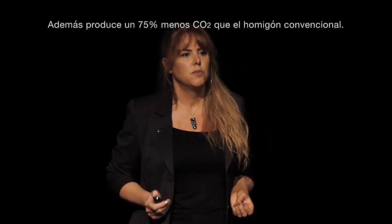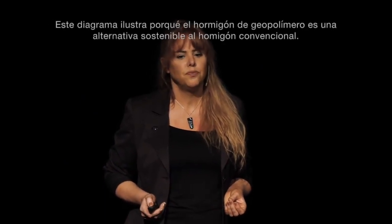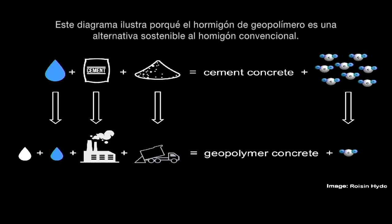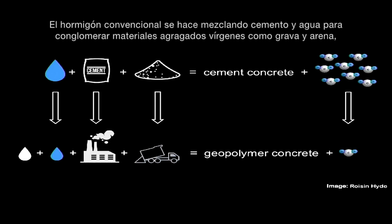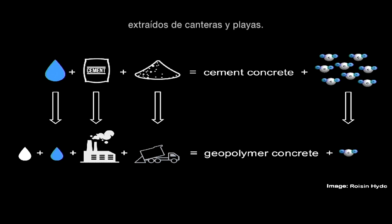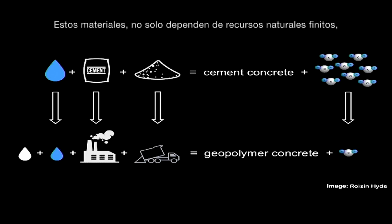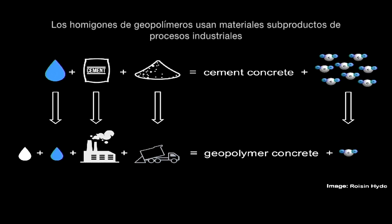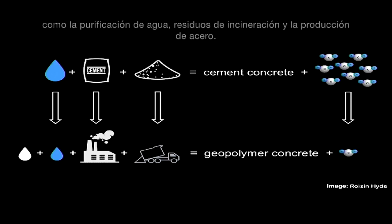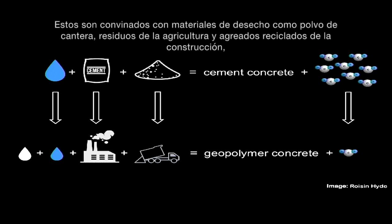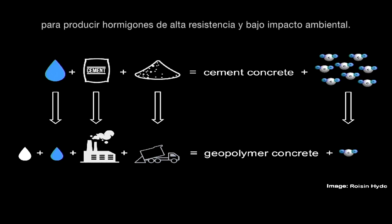It also produces 75% less carbon dioxide than conventional concrete. This diagram illustrates why geopolymer concrete is a sustainable alternative to conventional concrete. Conventional concrete is made using cement and water to bind virgin aggregate materials such as gravel and sand, taken from quarries, riverbeds, and beaches. Not only does this material rely on finite natural resources, but it also produces large volumes of carbon dioxide. The geopolymer concrete uses the by-product materials of industrial processes such as water purification and waste incineration, and the production of steel, combined with waste materials such as quarry dust, agricultural waste, and recycled construction aggregates, to produce high performance, low impact concrete.